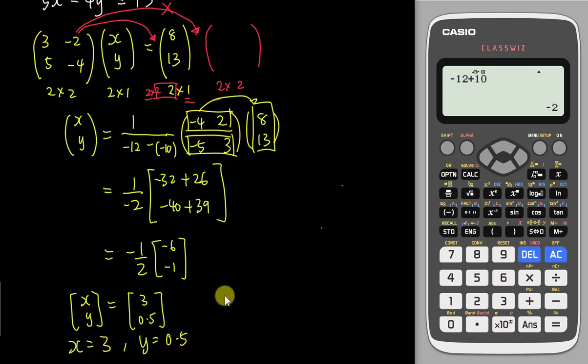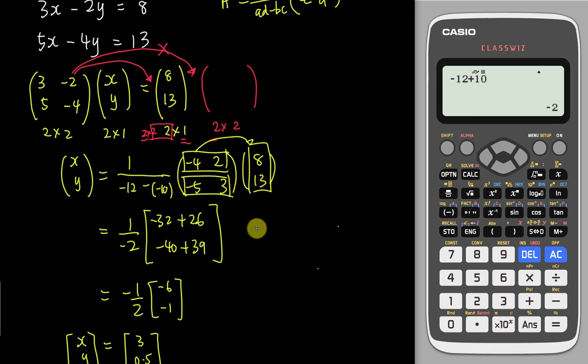Of course, you can substitute back this answer into any of the equations. You have two equations. You can plug into either one of these to check your answer is correct or wrong. Let's try to check it out. Let's say 3x - 2y. I want to see is it equals to 8 or not. So my x equals 3, I apply in here. This one will be y will be 0.5. This one will be 9 - 1. Then I will get 8. Then I know my answer is correct.